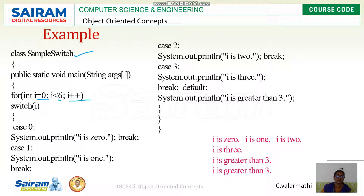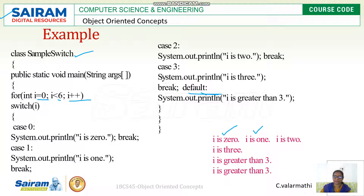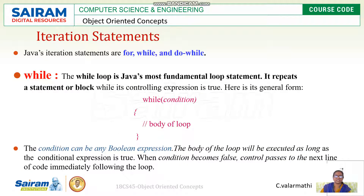In a sample switch example: int i initialized to 0, looping while i is less than or equal to 6 with i++. The switch checks the value of i through cases 0, 1, 2, 3. When i equals 4 it doesn't match any case, so the default statement executes — printing 'greater than 3'. Output is: i is 0, i is 1, i is 2, i is 3, then default for i = 4 onward.